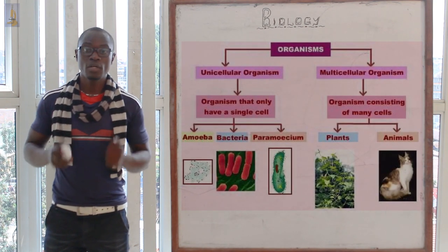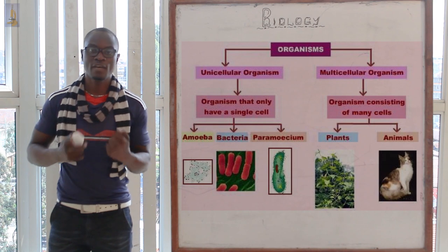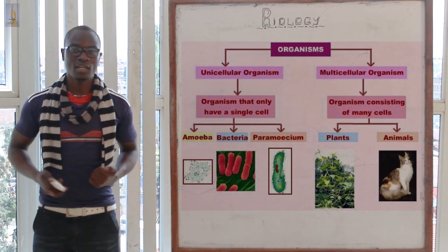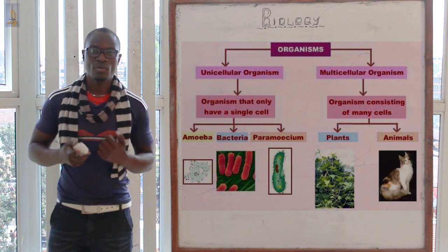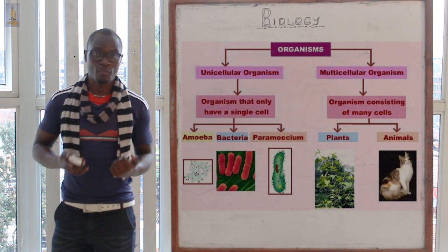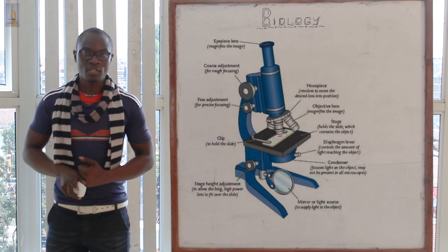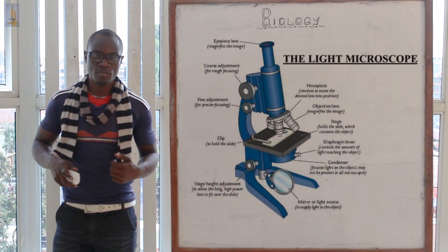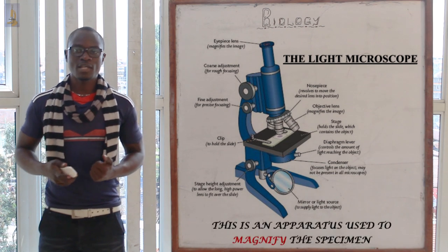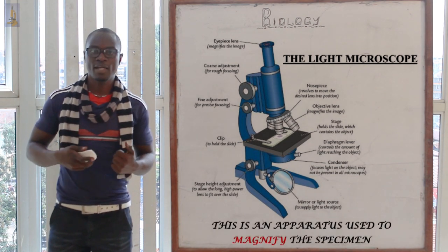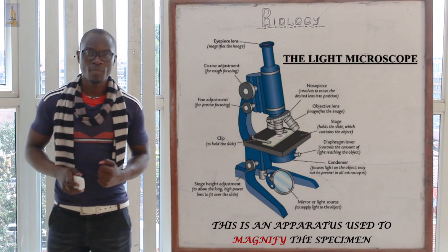Cells can only be seen by using a microscope. You can never see a cell with the naked eye or a magnifying glass; you must use a microscope. A microscope is an apparatus that is used to magnify a specimen.